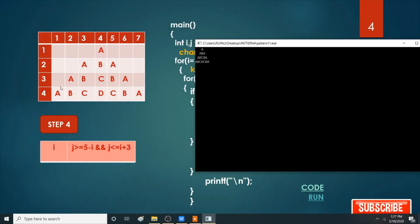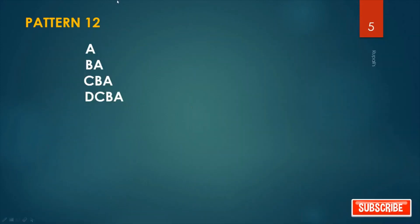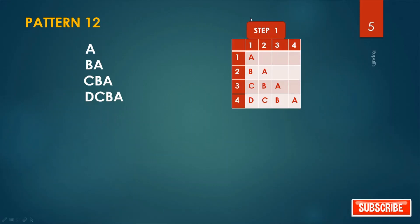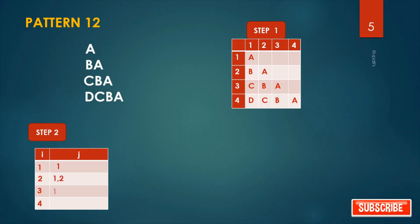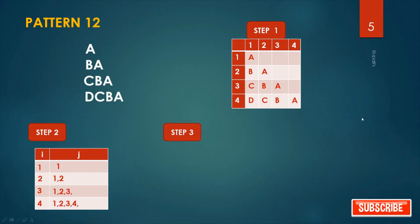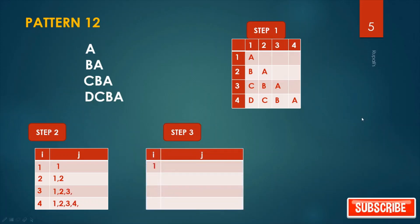Our next pattern is this. First, solve this pattern by four steps. Step one: draw the table — four rows and four columns, place your character accordingly. Step two: how many rows — four. Where is our alphabet? Row one: first column; row two: first and second column; row three: first, second, third; row four: one, two, three, four.